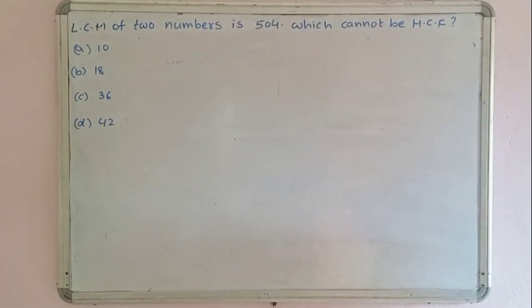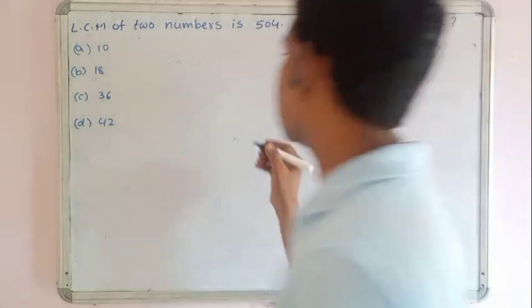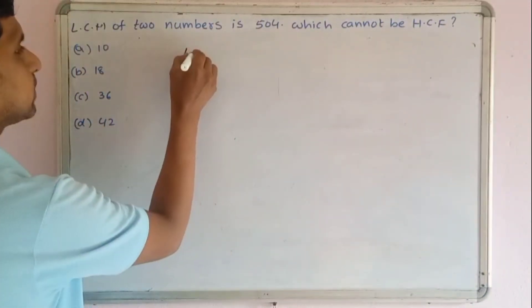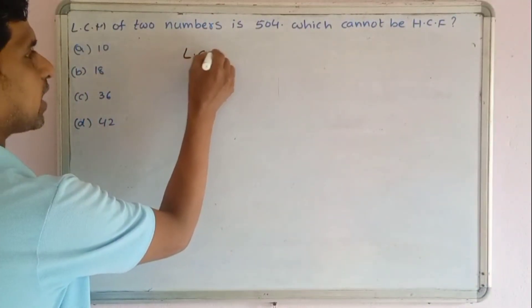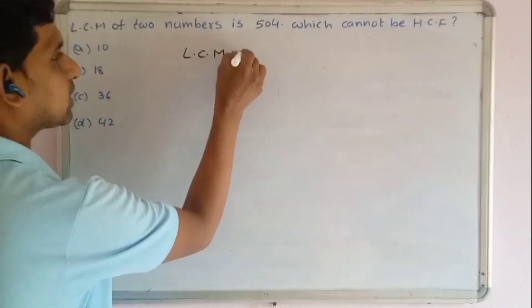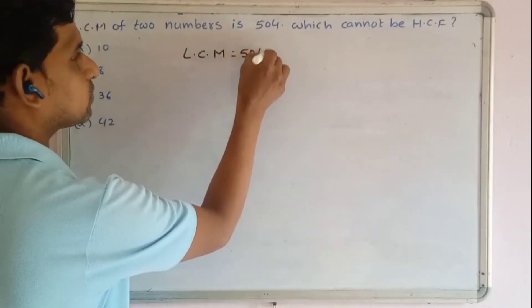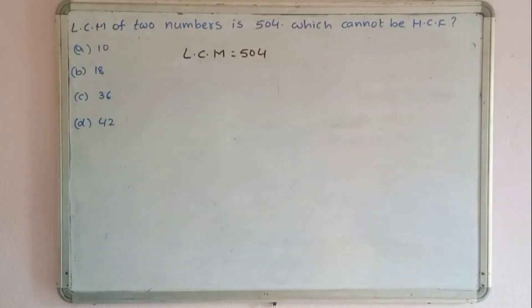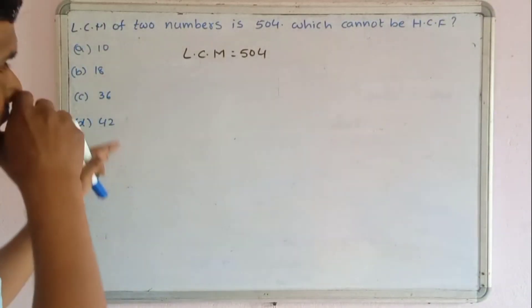Which cannot be an HCF of two numbers if their LCM is 504? LCM is the least common multiple and here LCM equals 504. Which of the options cannot be the HCF?